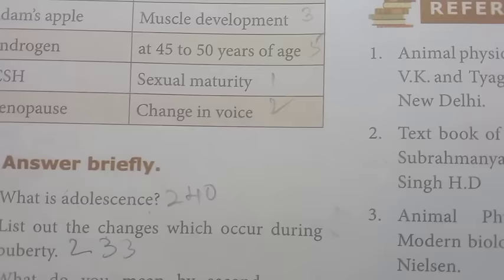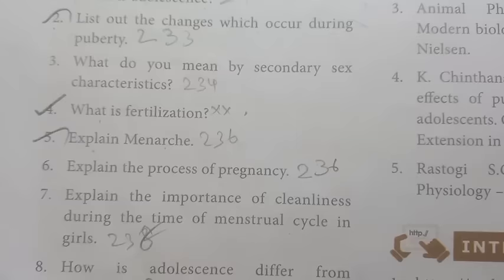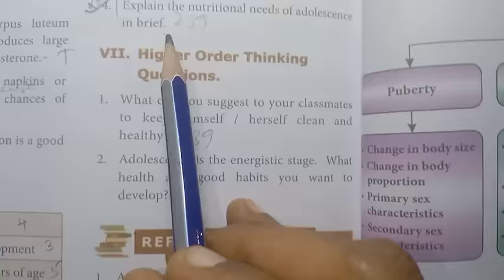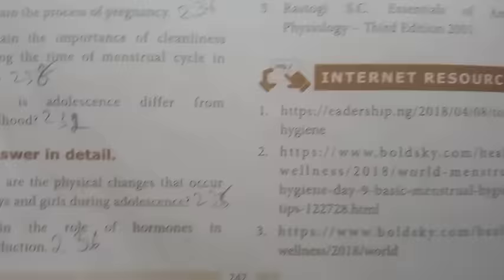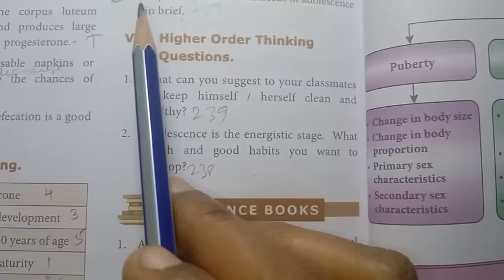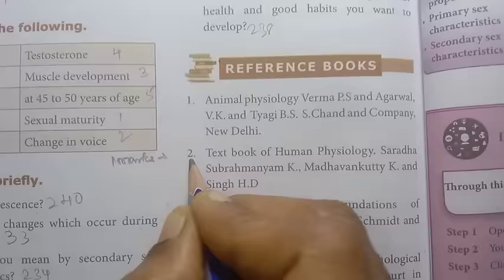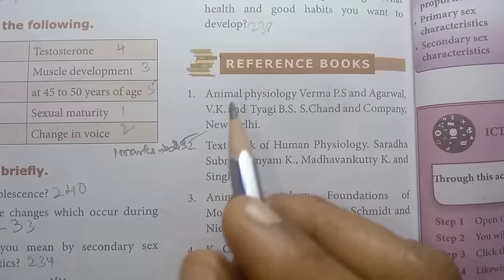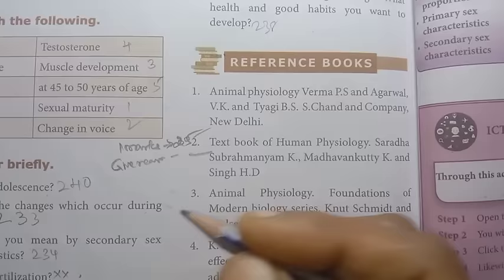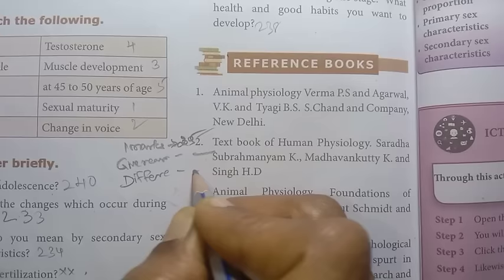Unit 20, Reaching the Age of Adolescence. Look at page 241, one marks. Answer briefly: What is adolescence? List out the changes which occur during puberty. What is fertilization, important. Explain menarche, this is important. Answer in detail: Explain the nutritional needs of adolescence in brief, repeated question. Explain the role of hormones in reproduction, important question, repeated.